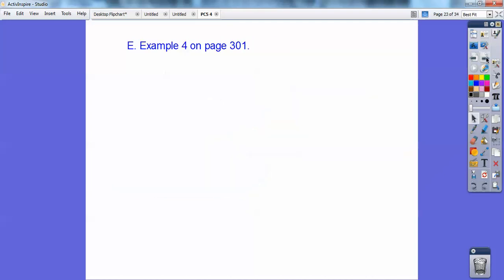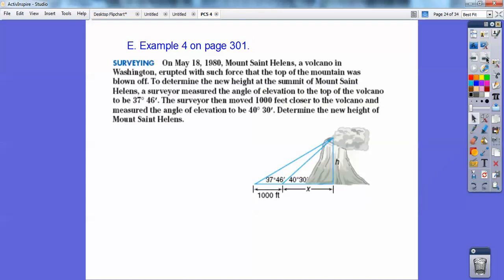Okay, so it just depends on what they're given here. So here's example four on page 301. On May 18, 1980, Mount St. Helens, a volcano in Washington, erupted. I remember that, you guys. Ashes. We lived here in Sacramento. Ashes came all the way down from Mount St. Helens, which is several hundred miles away.